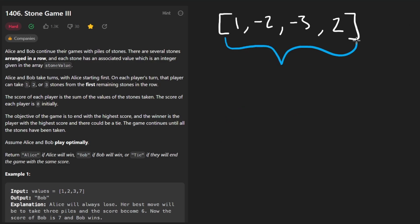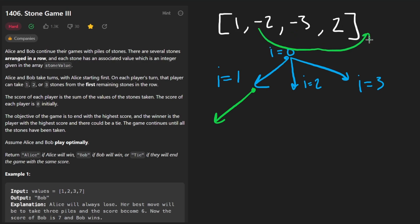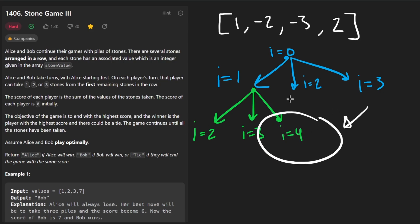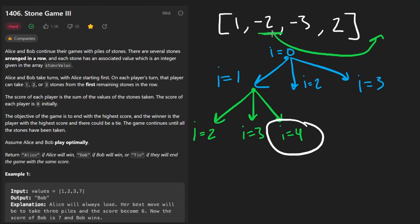Does this actually work and why? Suppose this is our input array, alice goes first, and our index pointer starts at zero. She can choose the first one, two, or three stones — so three branches: i equals one, two, or three. From there it's bob's turn, and bob can take one, two, or three stones, possibly going out of bounds — reaching i equals two, three, or four.